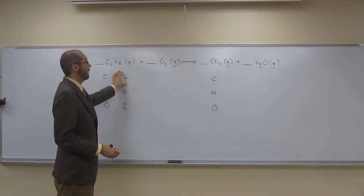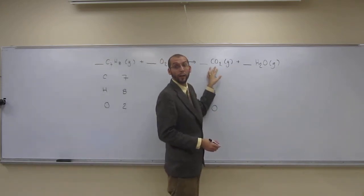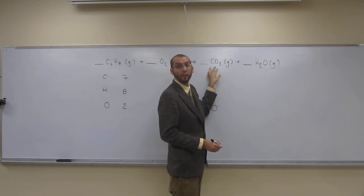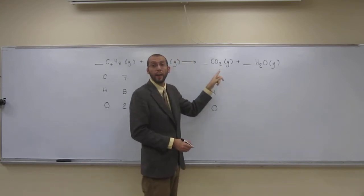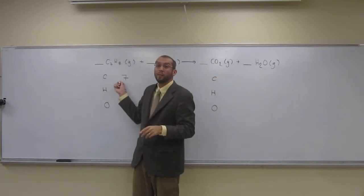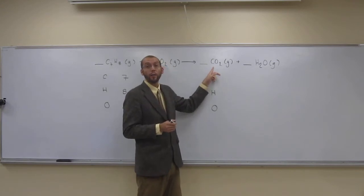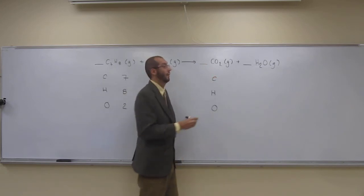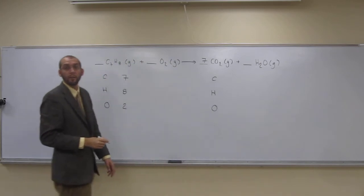Okay, so seven carbons. The only thing that has carbon in it over here is carbon dioxide, right? And how many carbons does it have in it? One. So, how many carbon dioxides are we going to have total? Well, we have to have seven carbons, and there's one carbon in each carbon dioxide. So, how many carbon dioxides do we have to have? Seven. Seven times one is seven, right?